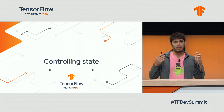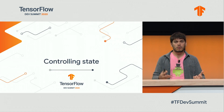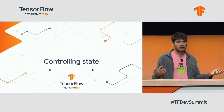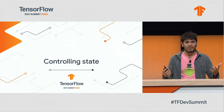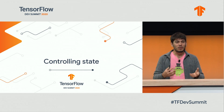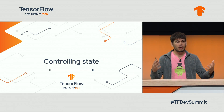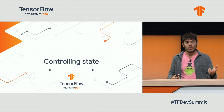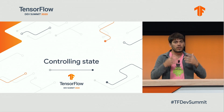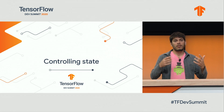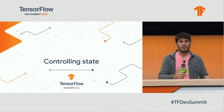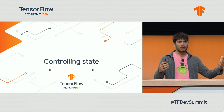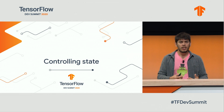I want to start by helping you control how TensorFlow represents state. If you've used TensorFlow before, you know that a lot of our libraries use tf.Variable to represent state, like your model parameters. For example, a Keras dense layer has one kernel matrix and an optional bias vector stored in it.